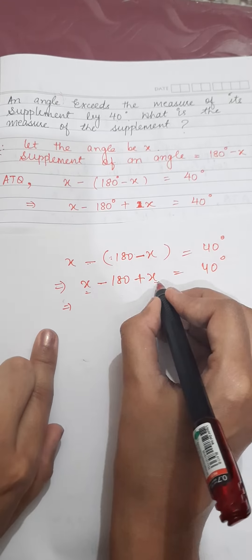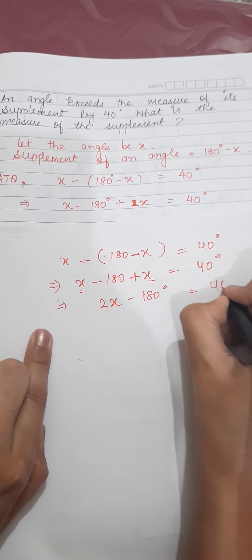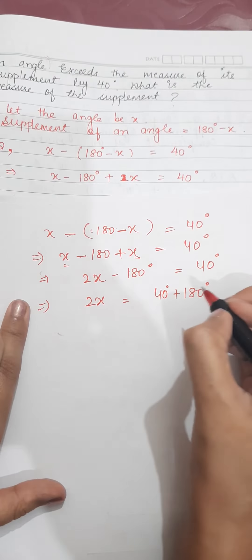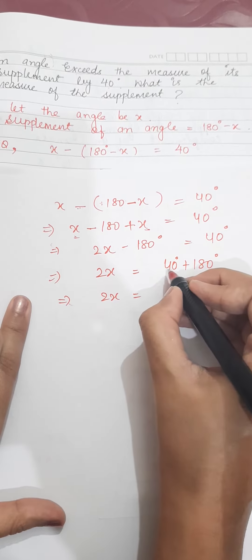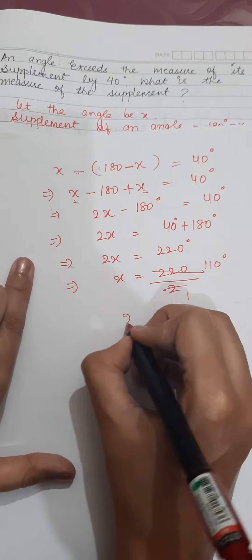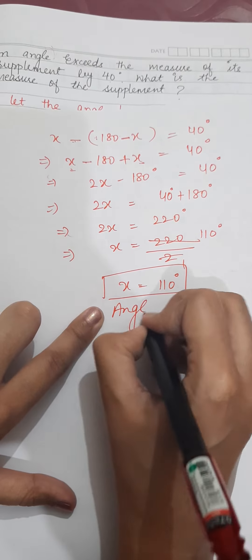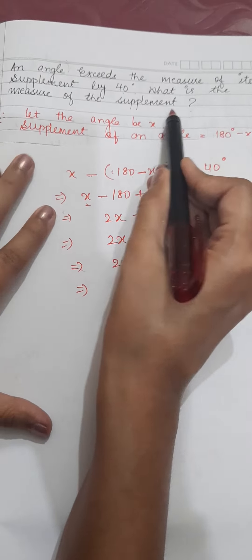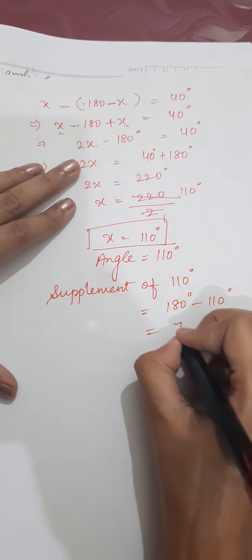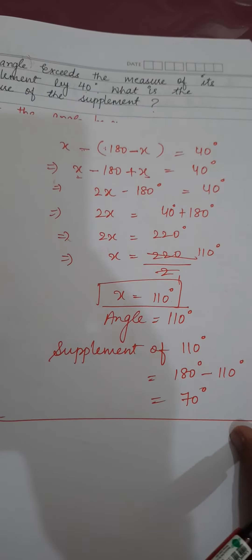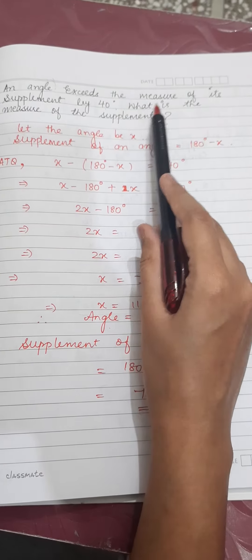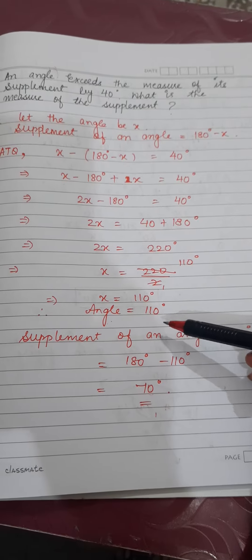Adding 180 to both sides: 2x = 40 + 180 = 220. So x = 220/2 = 110 degrees. But this is not the final answer — the question asks for the measure of the supplement. Supplement of 110 = 180 - 110 = 70 degrees. So the answer to question 5 is 70 degrees. Make sure you find the correct answer: first find the angle, then find its supplement.